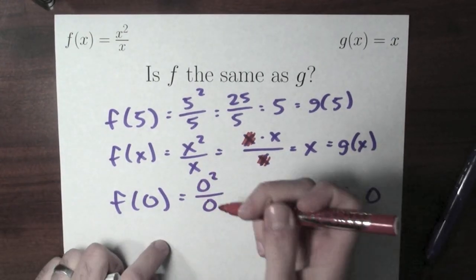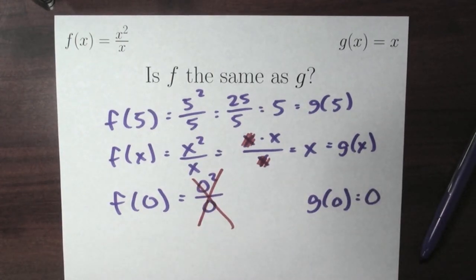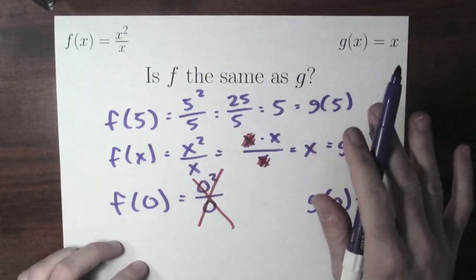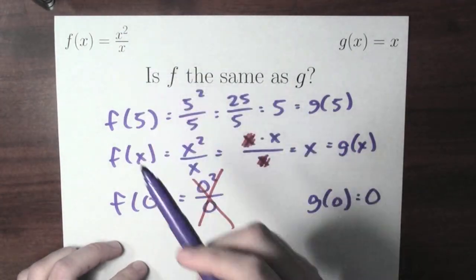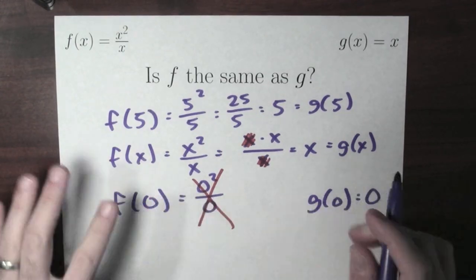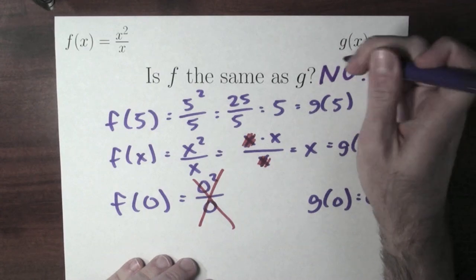Whoa, okay. You see, this is terrible. I cannot divide by 0. This rule, x squared over x, doesn't make sense when x is equal to 0. So 0 is not in the domain of f, but it is in the domain of g.